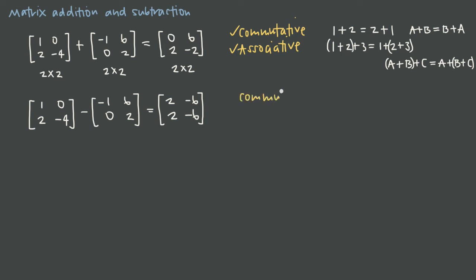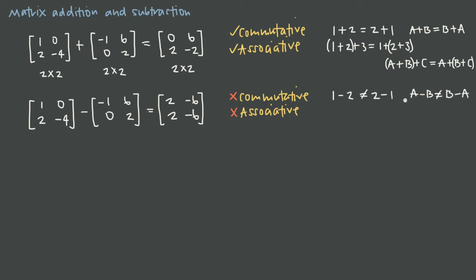On the other hand, matrix subtraction is not commutative and it's also not associative. With the commutative property, if I say 1 minus 2 versus 2 minus 1, those two things are not equal to each other: 1 minus 2 is negative 1, and 2 minus 1 is positive 1. So I don't get the same result with real numbers, and I also don't get the same result with matrices. A minus B is not the same as B minus A, so I have to keep the order the same.